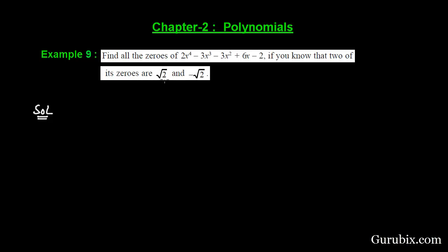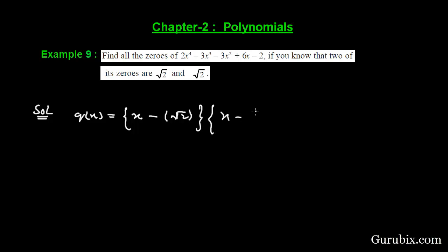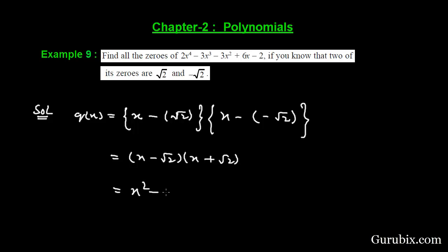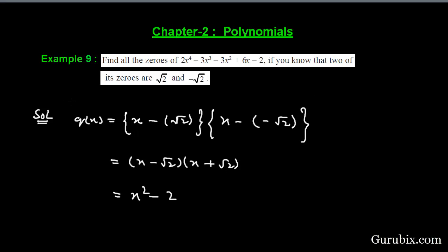First of all, we shall find a polynomial whose zeros are √2 and minus √2, and we let that it is q(x). Therefore q(x) equals x minus √2 into x minus (minus √2), which means it will be x minus √2 into x plus √2. Finally it will be x² minus 2.